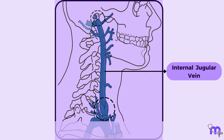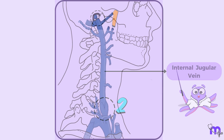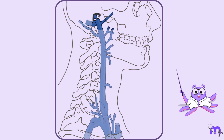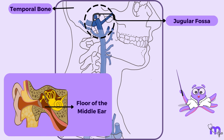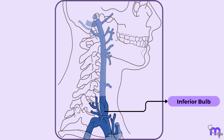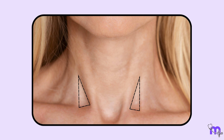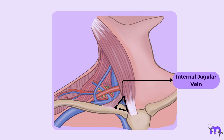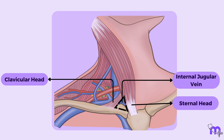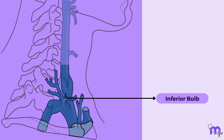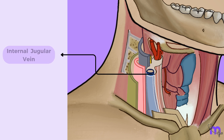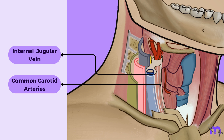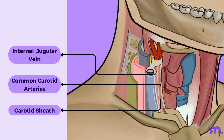The internal jugular vein exhibits two dilations along its course: the superior bulb at its commencement, located within the jugular fossa of the temporal bone and related to the floor of the middle ear, and the inferior bulb, close to its termination, situated in the lesser supraclavicular fossa between the sternal and clavicular heads of the sternocleidomastoid muscle. The inferior bulb is guarded by a pair of valves that prevents backflow. In its course, the internal jugular vein lies on the lateral side of the internal and common carotid arteries, enclosed within the carotid sheath alongside the vagus nerve.